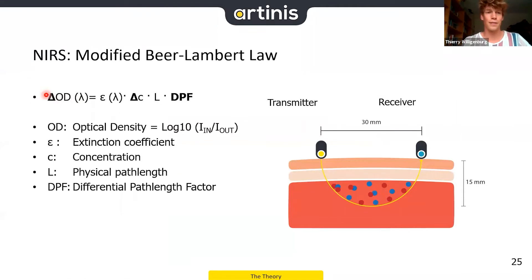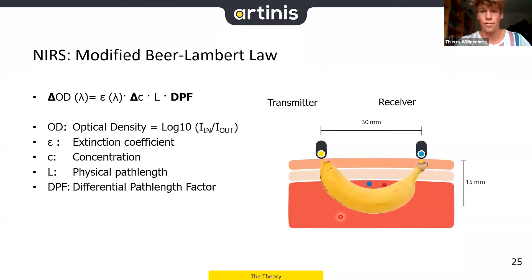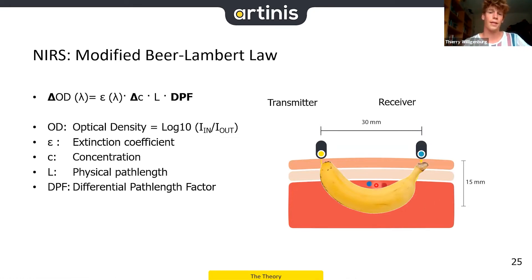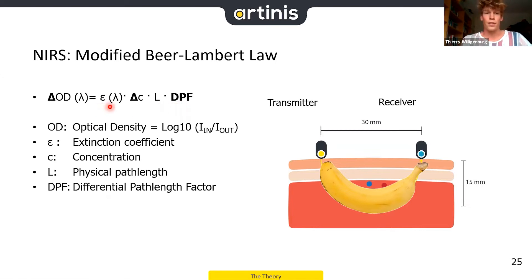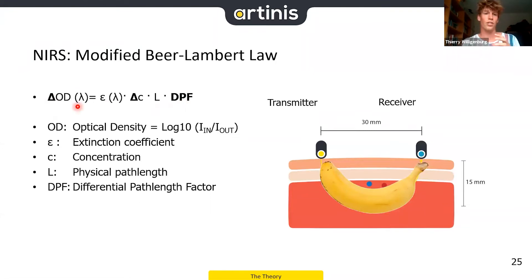In NIRS, we use a slightly adapted version: the modified Beer-Lambert law. We included a delta to measure changes, and we included the DPF — the differential path length factor. In theory, the light path from transmitter to receiver is a thin line, but in practice it's more of a banana shape due to scattering. The DPF corrects for these light losses due to scattering, and is typically set to 4 for muscle research. Since the molecular extinction coefficient, length, and DPF are all constants, a change in optical density equals a change in concentration.